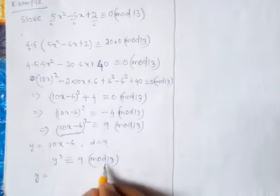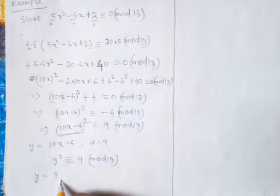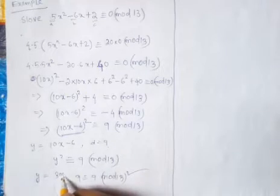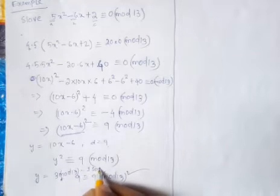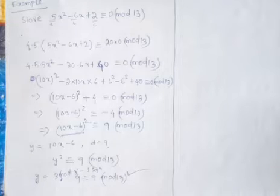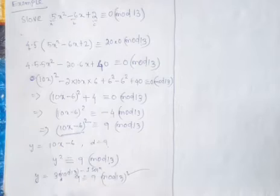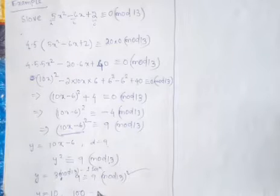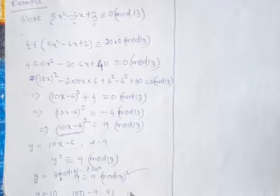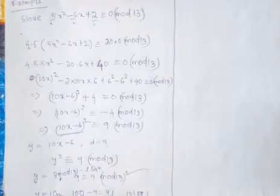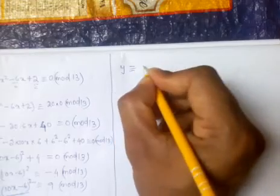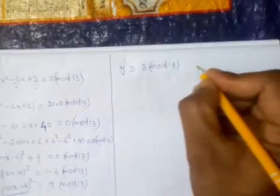To find y, clearly y = 3 works because 3² = 9 ≡ 9 mod 13. So y ≡ 3 mod 13 is one solution. For another solution, we try values from 1 to 12. Trying y = 10: 10² = 100, and 100 - 9 = 91, which is divisible by 13 (91 = 7×13). So y ≡ 10 mod 13 is the second solution.